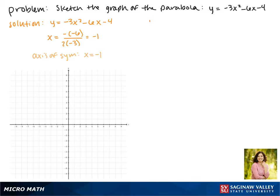We can find the y value of the vertex by plugging negative 1 back into our equation for x. This gives us that y equals negative 1, so our vertex is the point negative 1, negative 1. Here's our axis of symmetry on the graph and then here is our vertex.